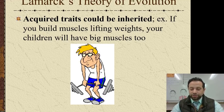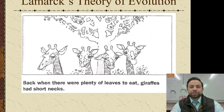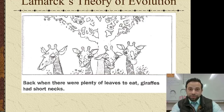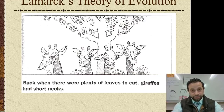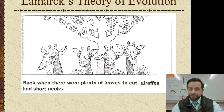We know that Lamarck's theories of evolution are wrong, but we still want to give him some credit for being the first to come up with his theories of evolution. He also talked about acquired traits — if you build muscles lifting weights, your offspring will have big muscles too. We know that is not true, so good try Lamarck, but not correct. Lamarck's theory of evolution was wrong.